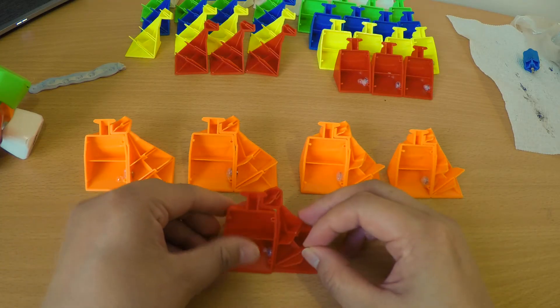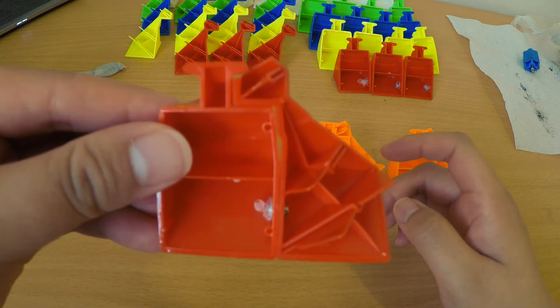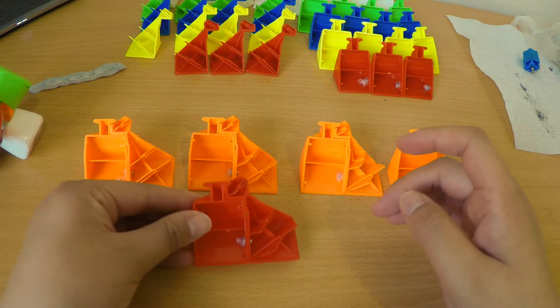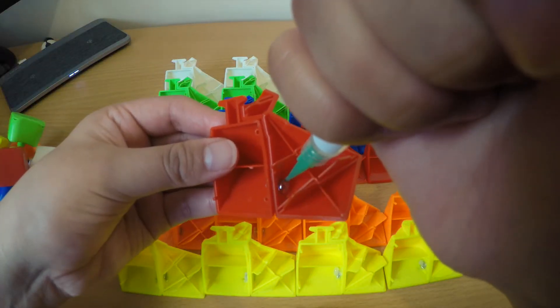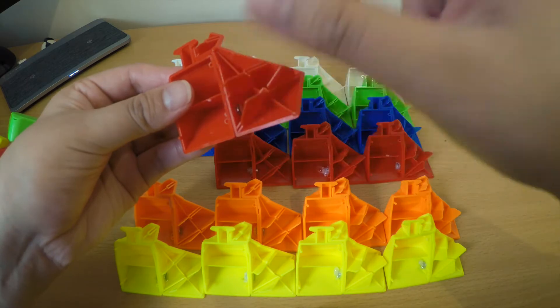Now we're going to take that magnet we didn't glue down, stick it to the edge piece to the corner piece like so to make sure the positioning is correct. Then we're going to put some glue on the magnet inside the corner piece and again allow these to cure for some time.